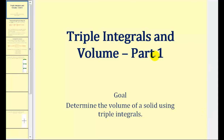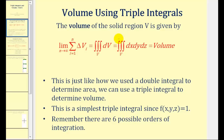Welcome to the first video on triple integrals and volume. We can determine the volume of a solid region V by using a triple integral over the region V integrated with respect to V. If we let the integrand equal the most basic function f(x, y, z) = 1 and rewrite the differential dV as dx dy dz or some other order, then let the limits of integration represent the solid V, this will give us the volume of the solid. This is very similar to how we use a double integral to determine area — we can now use a triple integral to determine volume.